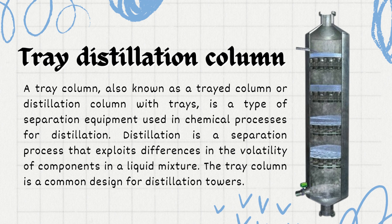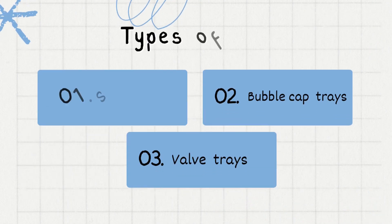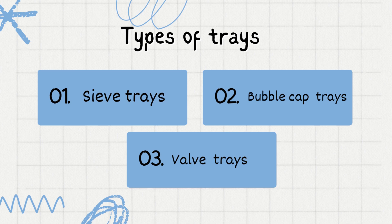The trays are designed to facilitate separation of components based on volatility difference — the tendency of a substance to vaporize. Components with lower boiling points vaporize more readily. As the liquid mixture is heated in the reboiler at the bottom, it vaporizes. The resulting vapor rises through the column and comes in contact with the liquid on each tray, creating vapor-liquid contact. The better the vapor-liquid contact, the better the efficiency of the distillation column.